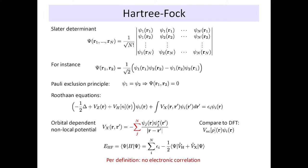No two electrons of the same spin can occupy the same orbital. And that is expressed here: if you put two electrons in with the same spin in the same orbital, this will be essentially zero.